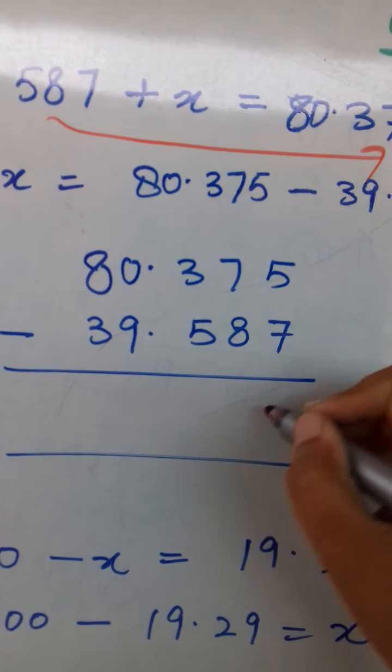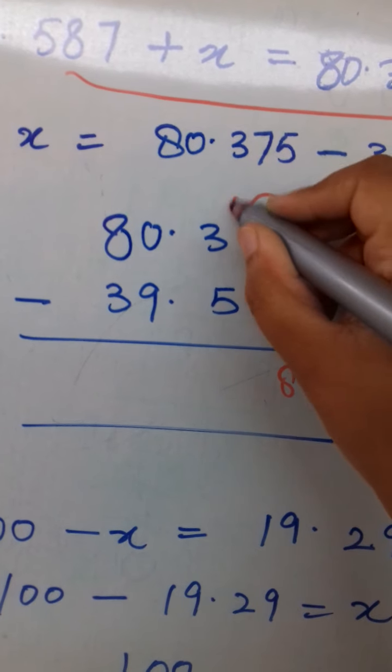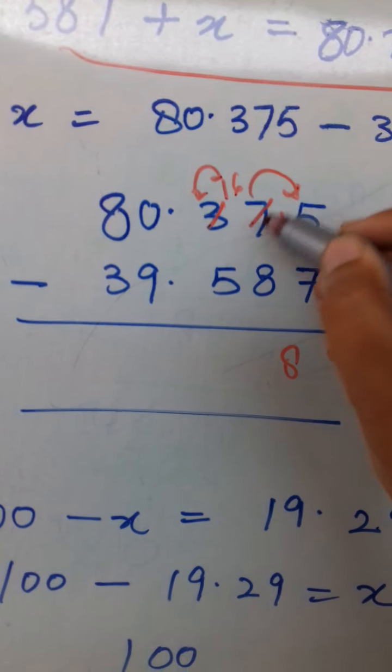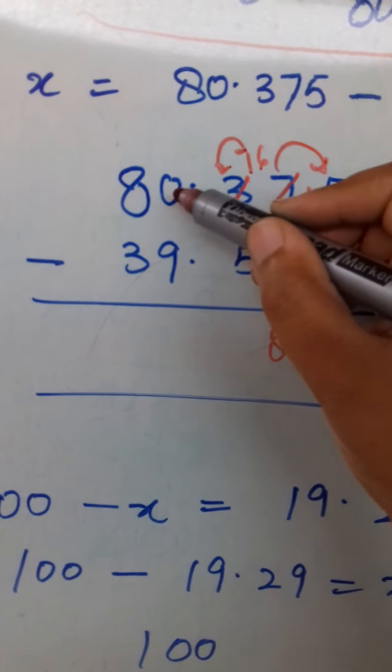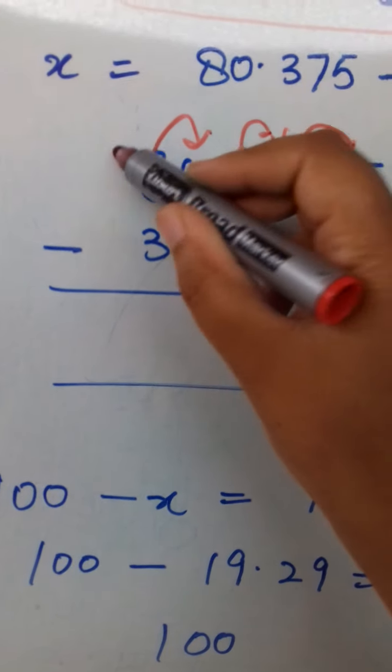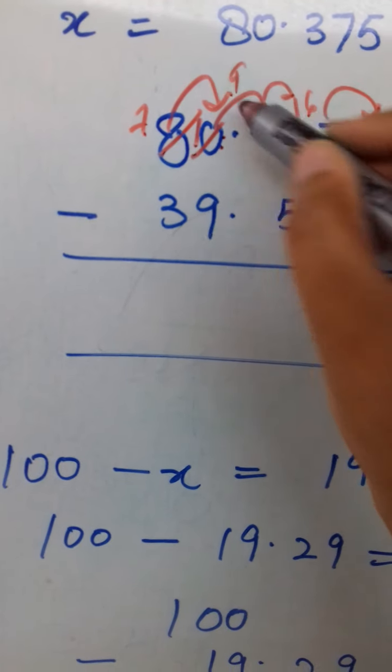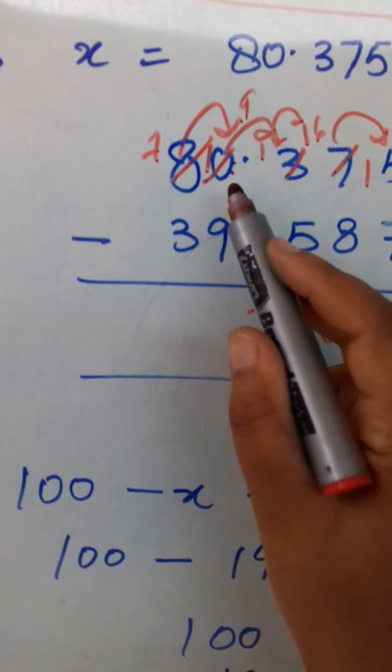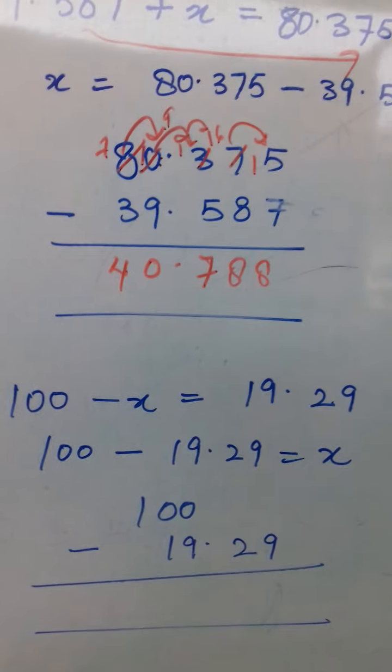Now 15 minus 7 is 8. You know how come 15? From here 6. Now from here 16, so 2 is left. 16 minus 8 is 8. Now again from here we will take, and it will take from here. So 7 will be left, 10. And 10 will give it to this 12, so 9 will be left. So now 12 minus 5 is 7 and decimal. Now 9 minus 9 is 0, and 7 minus 3 is 4. So 40.788.